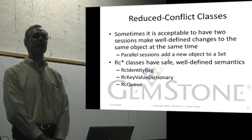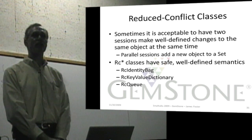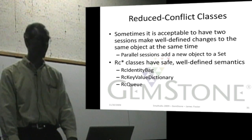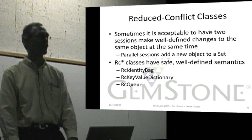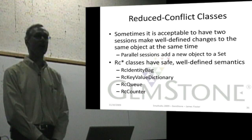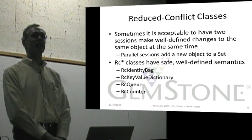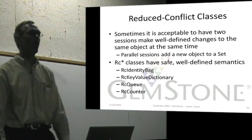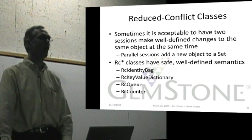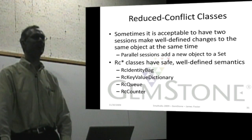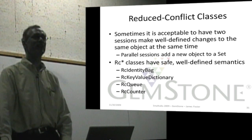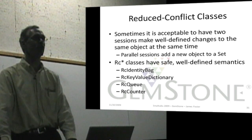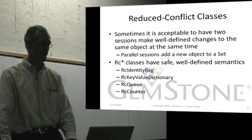GemStone has an RC queue where multiple sessions can add objects to the queue, and then one session can take items out of the queue and they'll come off in order. There's also an RC counter where multiple sessions can increase or decrease a counter. While the current value might not reflect all the changes in the moment, once everybody has committed and logged out, the counter will have the correct, consistent value reflecting all modifications that have been made.